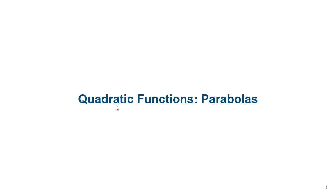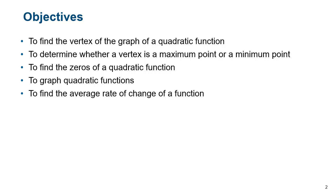Welcome to our discussion on quadratic functions, better known as parabolas, or the horseshoe-shaped functions. These are the objectives: we're going to find the vertex, determine if that vertex is a max or a min, find the zeros of the quadratic on both the x and y axes, figure out how to graph these functions, and find the average rate of change of the function over a certain interval.